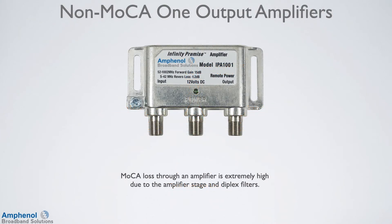Here I'm showing a one-output non-MOCA amplifier. The MOCA loss through this amplifier is extremely high due to the amplifier stage and the diplex filters — the MOCA signal is basically blocked. So if you have MOCA devices on the input side and the output side, they'll have a hard time communicating.